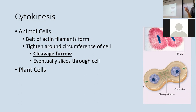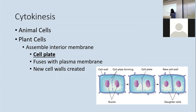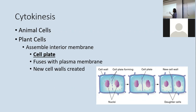Plant cells can't use a cleavage furrow because of their rigid cell wall — you can't just cinch and pop a plant cell. Instead, plant cells build a cell plate in the center, moving membrane and wall materials into the middle. The cell plate keeps building outward until it fuses with the outer cell wall, effectively building a wall in the middle of the original cell to create two cells. Animal cells use a cleavage furrow with actin filaments; plants use a cell plate that becomes a wall between the two cells.